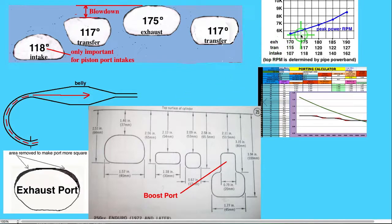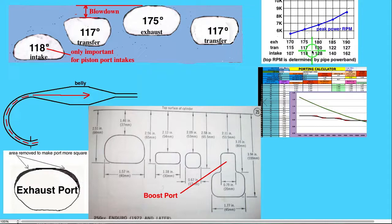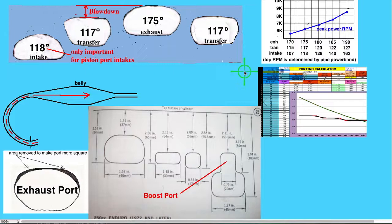One last thing: when you see a chart listing durations and top RPM or peak power RPM, that is only valid for that specific type of engine. It depends on the port widths, the shape, and the width of the exhaust port and transfers. There is no such thing as a good, accurate, dependable, universal chart for durations and RPM — it doesn't exist. When you figure out what an engine is doing, it has to do with both port size and durations, and these charts do not list area of the ports. That's all I have to say about porting — great, try it.